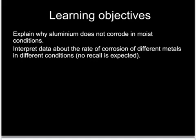You might get an exam question which asks you to compare various metals and their speed of corrosion. This will be like a data table with some questions about it, where you might be expected to look at the time taken for various metals to corrode and their suitability for particular tasks. One thing you need to know, however, is that aluminium doesn't corrode in moist conditions and to be able to explain why that is.